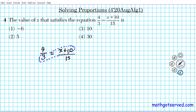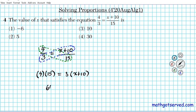4 multiplied by 15 equals 3 multiplied by (x + 10). Notice the parenthesis around the right term because it has more than one term. This looks better than the original because it has no denominator. 4 × 15 = 60, so: 60 = 3(x + 10). Distributing: 3 times x is 3x and 3 times 10 is 30. The goal is to isolate x with two algebraic steps: subtract 30 from both sides, then divide by 3.